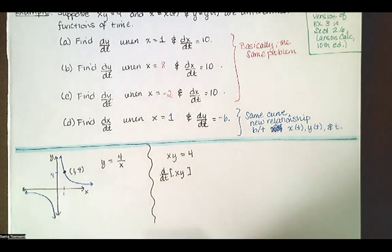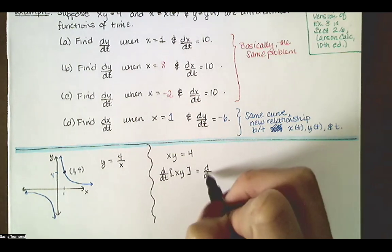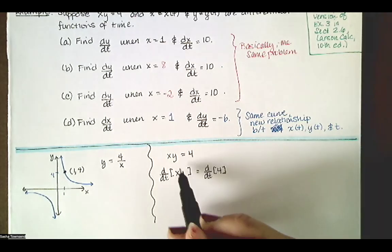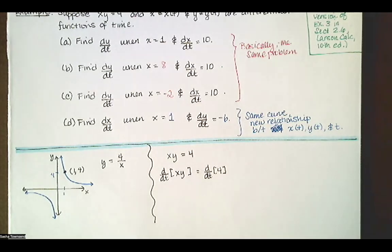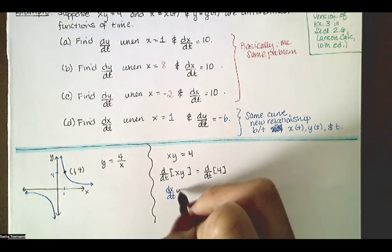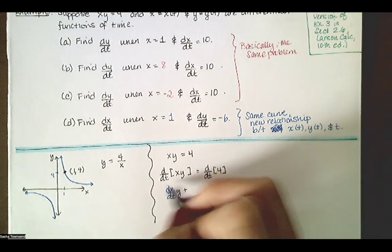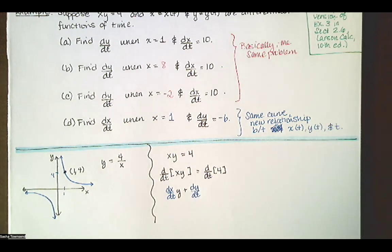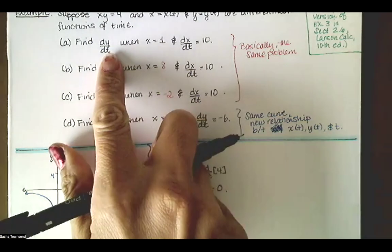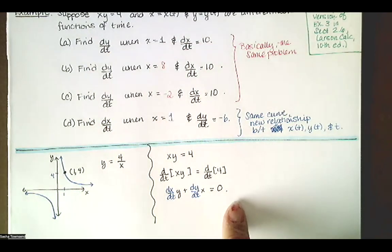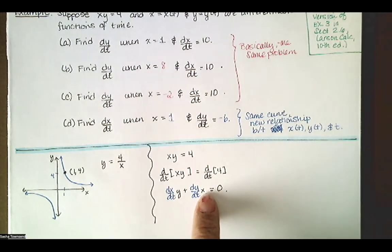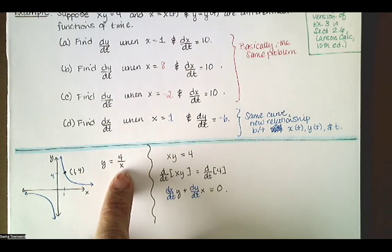When I take the derivative of xy, this is a product of a function of t and a function of t, so I have to use the product rule. We get: derivative of the first function with respect to t times the second (undifferentiated), plus the derivative of the second function with respect to t times the first (undifferentiated), equals 0. The problem said find dy/dt when x equals 1 and dx/dt equals 10. I know dx/dt, I know x equals 1, and since xy equals 4, I can find the corresponding y value.